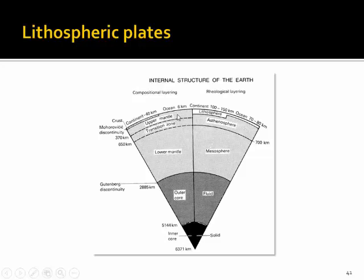Here we see the internal structure of the Earth shown in a different diagram from a different textbook, with compositional layering on one side and mechanical layering on the other. We see the lithospheric plates overlying the asthenosphere, and the crust and upper mantle separated from the lower mantle by a transition zone where certain mineralogical changes occur. The term mesosphere is probably largely obsolete and its boundary is not mechanically very important.